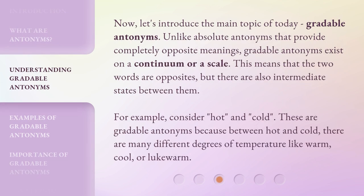Now, let's introduce the main topic of today: gradable antonyms. Unlike absolute antonyms that provide completely opposite meanings, gradable antonyms exist on a continuum or a scale. This means that the two words are opposites, but there are also intermediate states between them. For example, consider hot and cold — these are gradable antonyms because between hot and cold there are many different degrees of temperature, like warm, cool, or lukewarm.